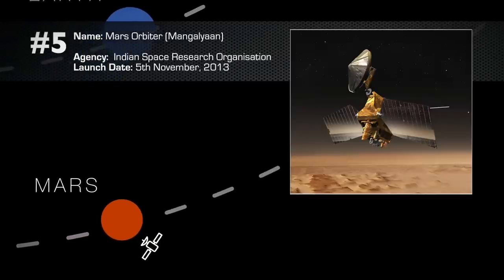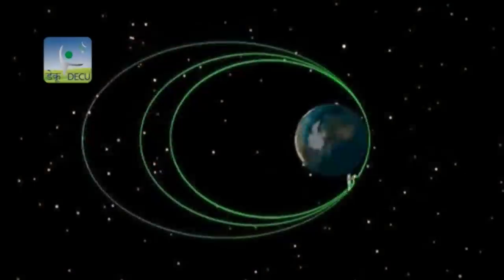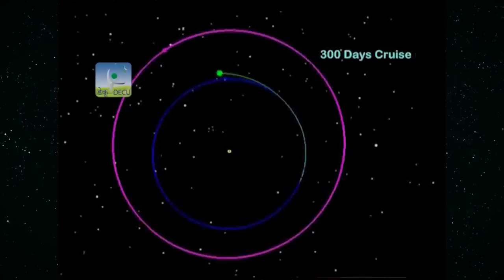At number five, meet India's very first interplanetary spacecraft, the Mars Orbiter, or Mangalayan. It took off from just north of Chennai and made a series of increasingly elliptical orbits around Earth before slingshotting off on a 300-day, 780-million-kilometre trip to meet up with Mars.